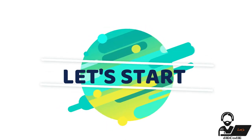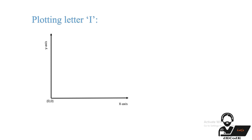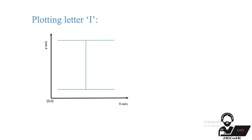Are you with me? Okay, let's start our session. Let's play with the plot function. Our agenda is to draw the uppercase letter I using the MATLAB plot function. If we want to plot I on the x and y axis, we should know its coordinates first. For the lower horizontal line, the points are 1,1; 2,1; 3,1; and so on up to 10,1.